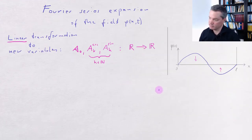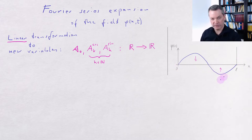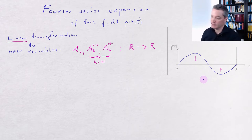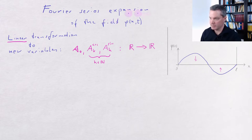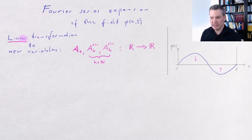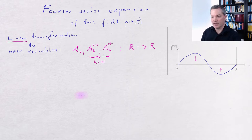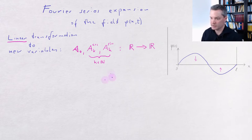In the previous part, we motivated our expectation that wave-like field configurations would have particularly simple behavior with time. This leads us to our next step: the expansion of our field in terms of its Fourier series. This will be a linear transformation to new variables.